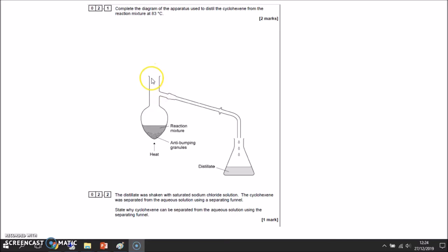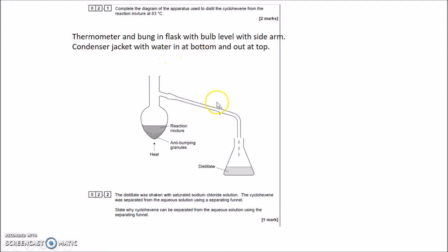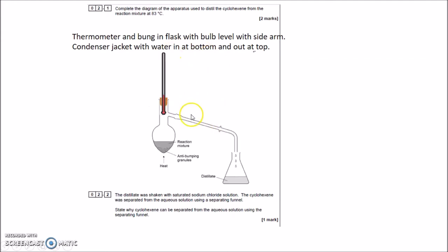I'll need a bung to stop gases escaping. So: a thermometer with a bung — bulb level with the sidearm — and a condenser jacket with water going in at the bottom and out of the top. Make sure the bung fits neatly, the bulb of the thermometer is at the bottom, and the condenser has an open tube down the middle with another tube around the outside carrying the cooling water.